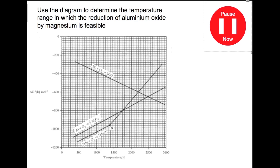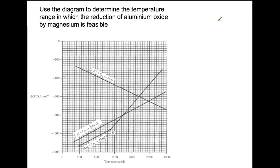Pause the video now. In this question, we're using the diagram to work out what range of temperatures we'd be able to use to reduce aluminium oxide using magnesium. We need to find the point at which magnesium is below the aluminium line. We have a crossing-over point which we can indicate with a line, and that gives us a temperature of below 1750 degrees.